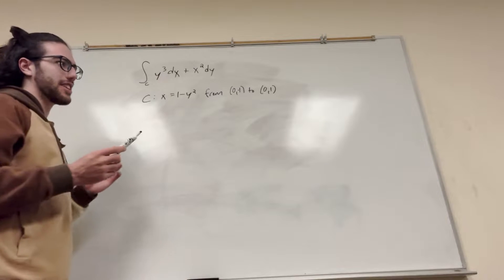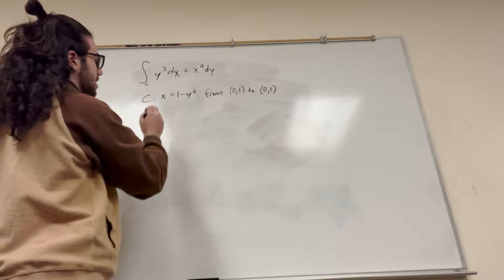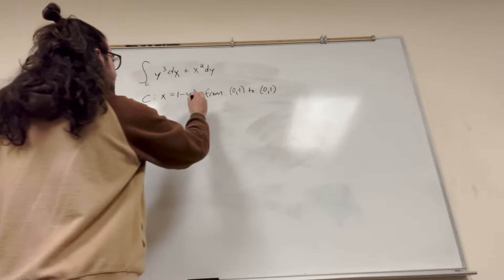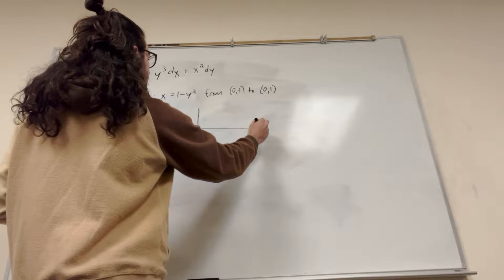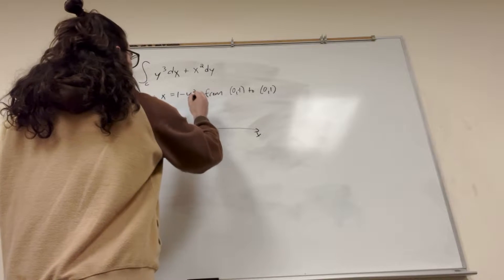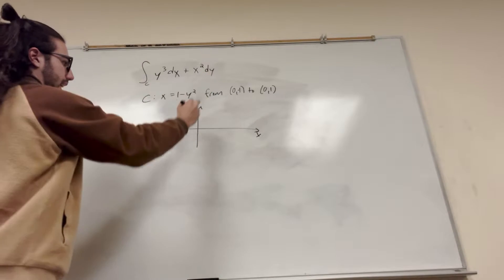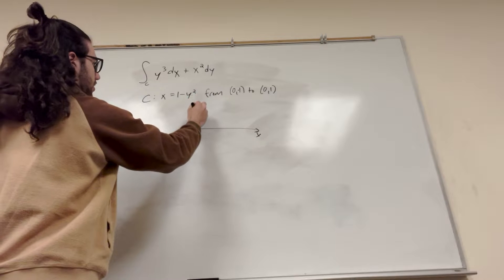So, first we want to plot our region, what our line is going to be. It says it's this parabola from (0, -1) to (0, 1). So let's go ahead and figure out what it's going to look like. Okay, so let's start with plotting our points. So we have (0, -1), which is here, and then (0, 1), which is up here.